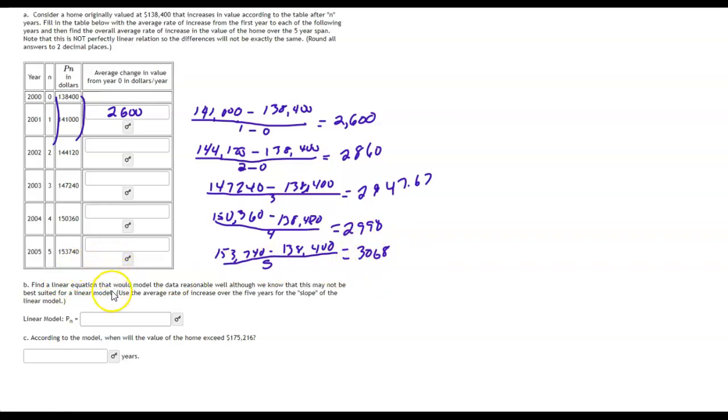Now it says to find a linear equation that would model the data reasonably well, although we know that this may not be best suited for a linear model. We'll just take a note of that. Notice it starts out at $2,600, then it goes to $2,860, $2,947.67. It's getting bigger and bigger every time.